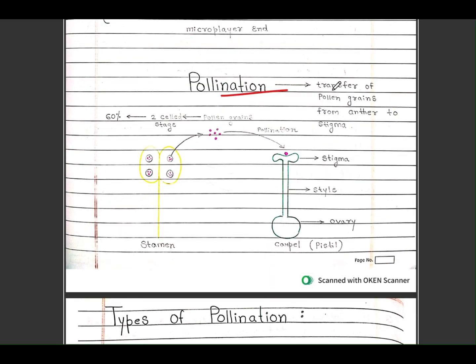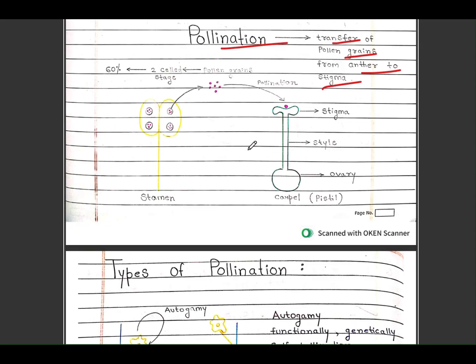Pollination is transfer of pollen grains from anther to stigma. It is a diagram of stamen, it is a diagram of carpel. You can see here, transfer of pollen grains occurs like this.